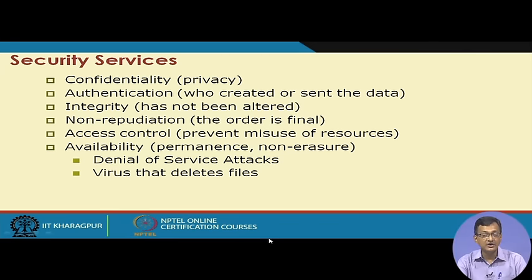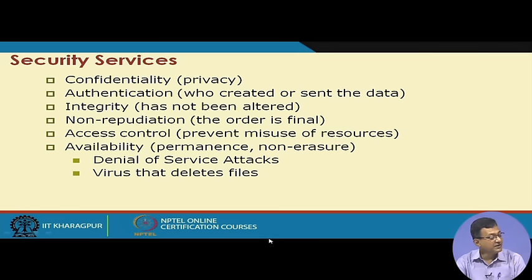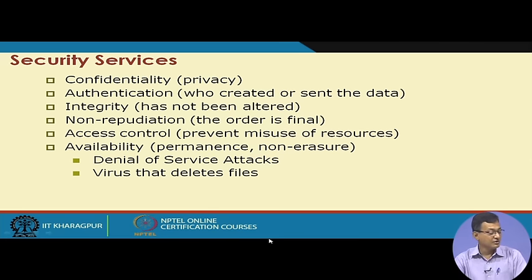Non-repudiation means the order is final — for example, if you instruct your bank online to transfer an amount and the next day deny it, there must be a way to handle that. Access control is a large field covering role-based access control mechanisms, preventing misuse of resources. Availability covers performance and non-erasure services, protecting against DoS attacks and viruses that delete files.